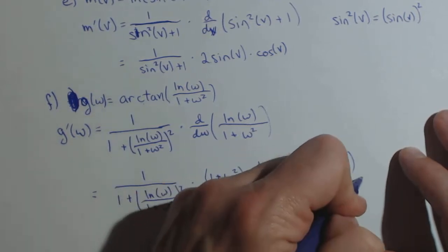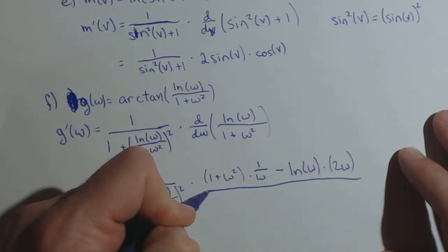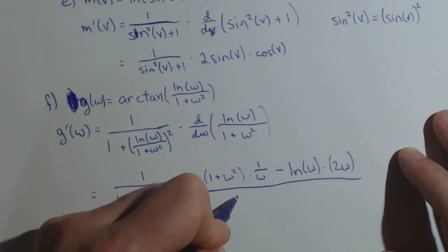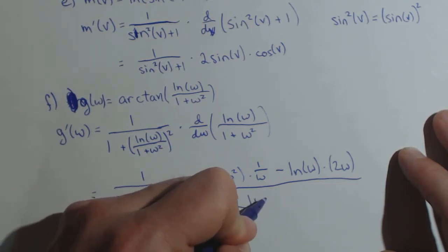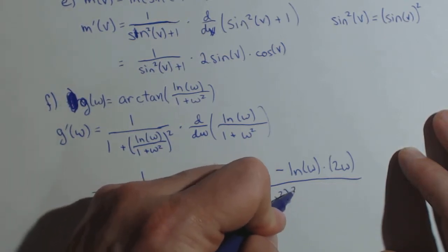all over the denominator squared, one plus w squared squared. I don't want to worry too much about simplifying this one right now. We're just working on derivative rules.